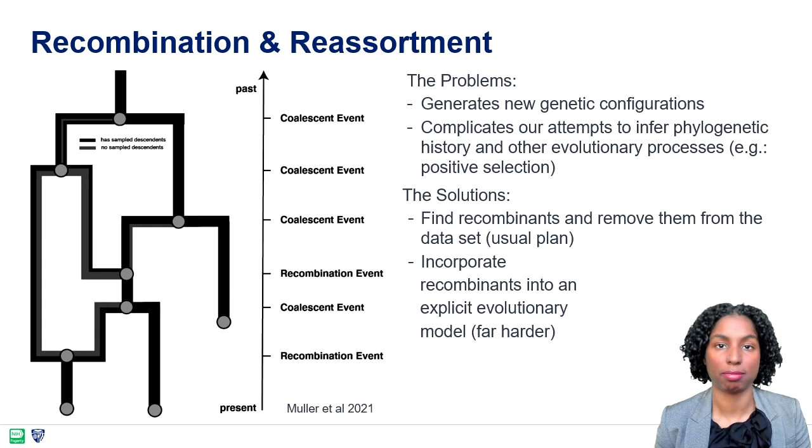Detection of recombinants allows us to identify sequences with these patterns and remove them from subsequent phylogenetic inferences. There have been efforts to develop models that incorporate recombination by Mark Suchard or Nicola Mueller, but this can really only be used for a small number of sequences.